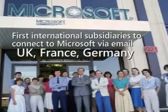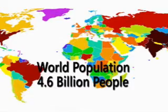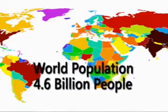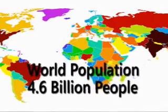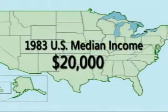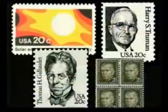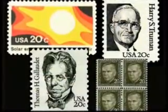Windows wouldn't actually ship until two years later. As the year came to a close, the first international subsidiaries to connect to Microsoft email were in Europe, including the UK, France, and Germany. In 1983, the world population was 4.6 billion, the median household income was roughly $20,000, and the cost of a first-class stamp was $0.20.